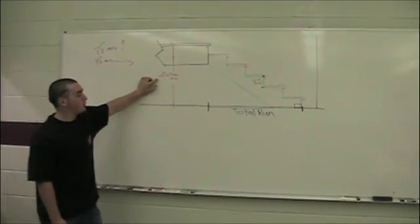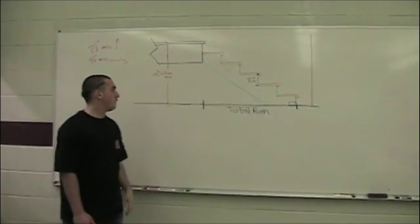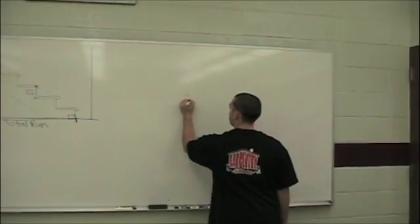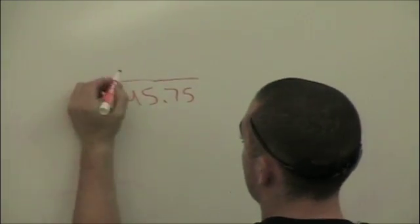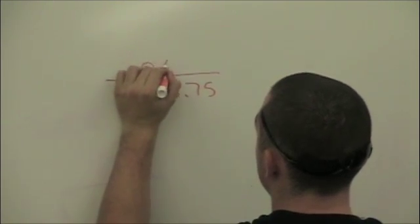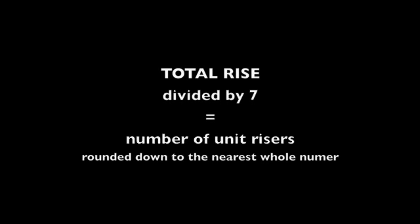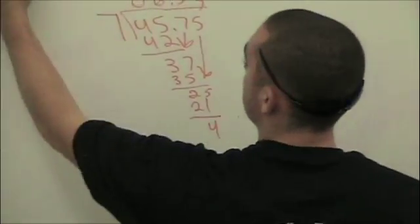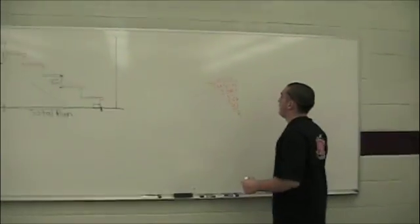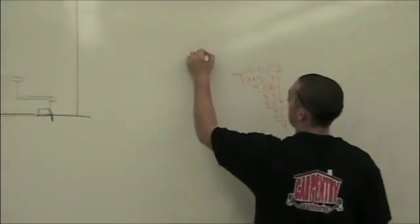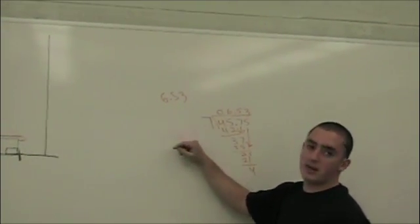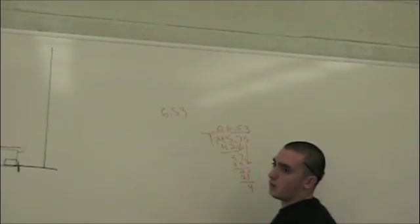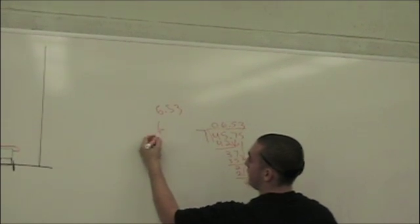What we do is take 45 and 3/4 and divide it by 7 to find out how many unit rises we have. After you divide 7 into 45, you get 6.53, which is how many steps you have. Since 0.53 doesn't make a whole step, you round it down to the nearest whole number, so it's 6 steps.